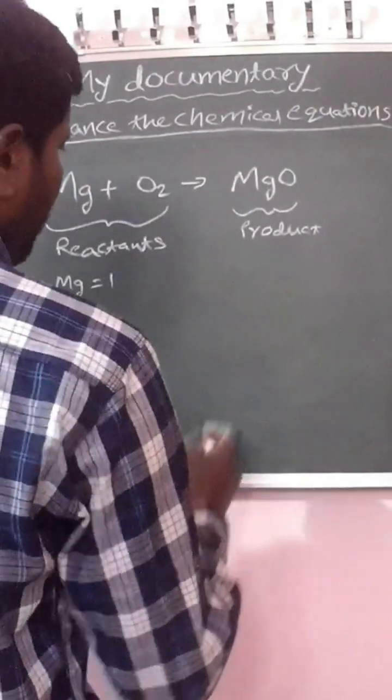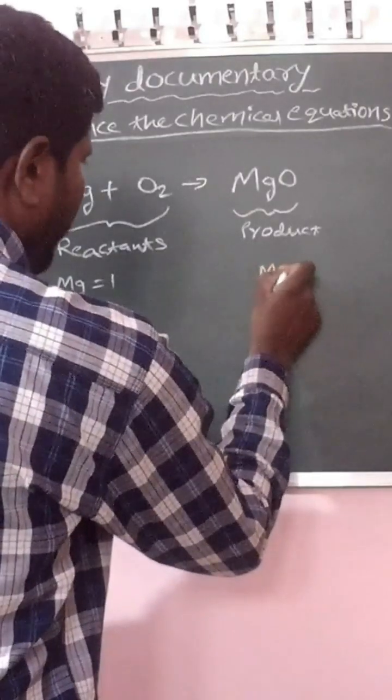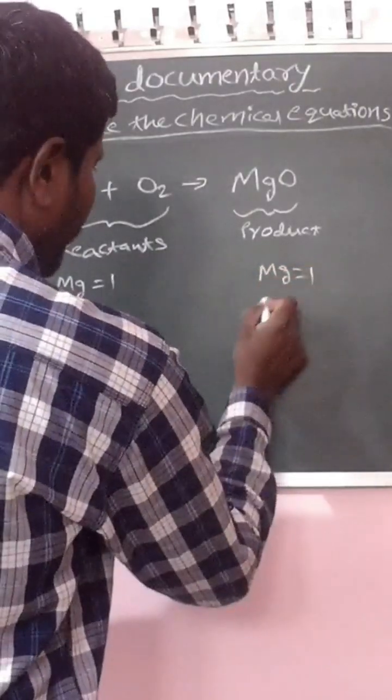And in the product side, the number of magnesium atoms is 1, the number of oxygen atoms is 1.